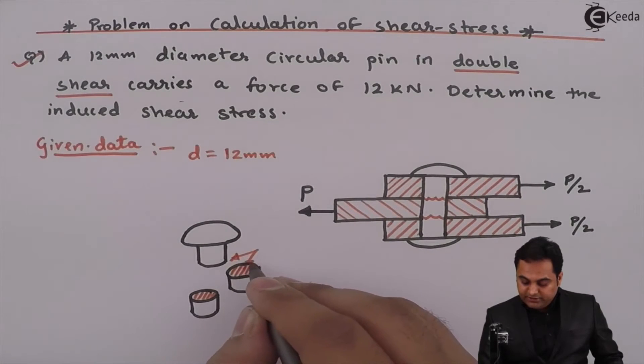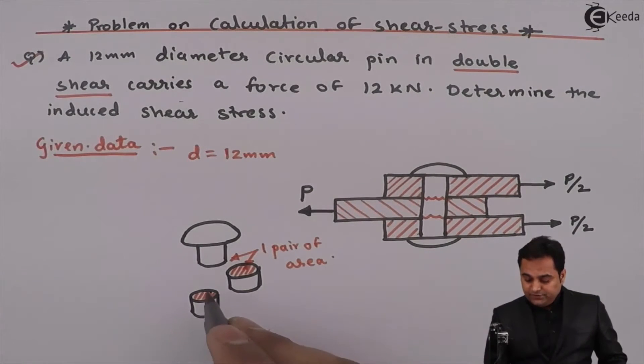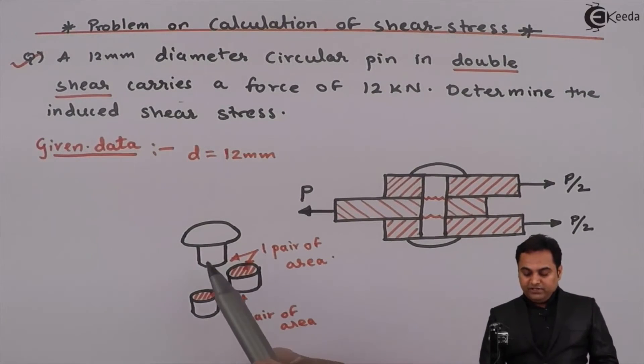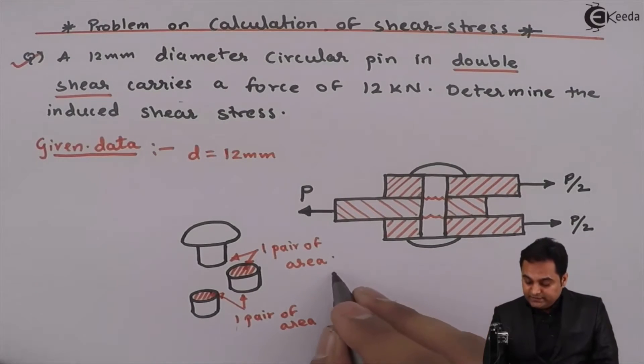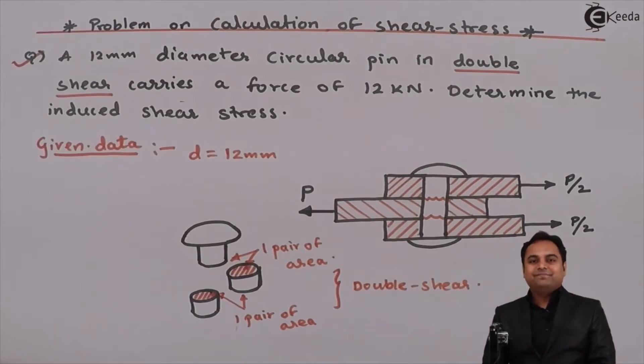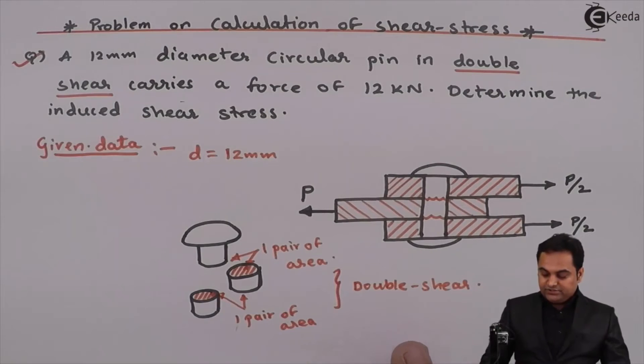So this indicates one pair of area. Next, here I am getting one pair of area. Another is here. So one pair of area at the top, one pair of area at the bottom. That is why it is a case of double shear. And it is shearing in two parts as we can see here. So here this is a case of double shear.